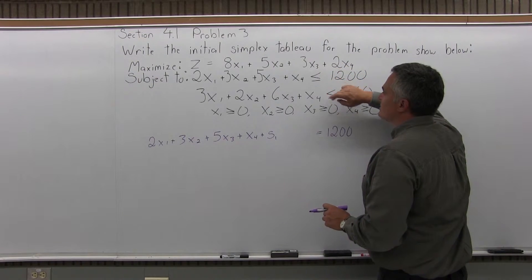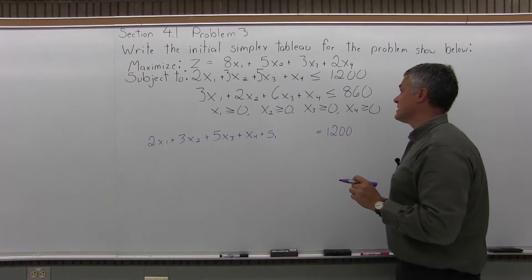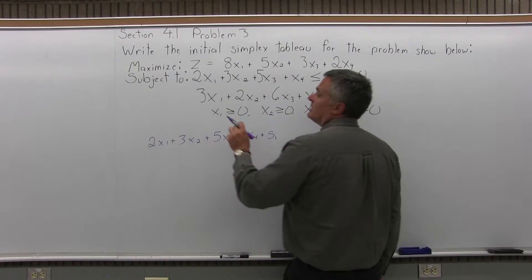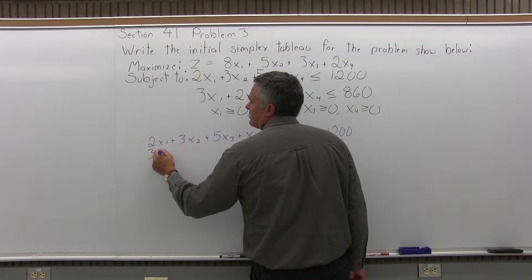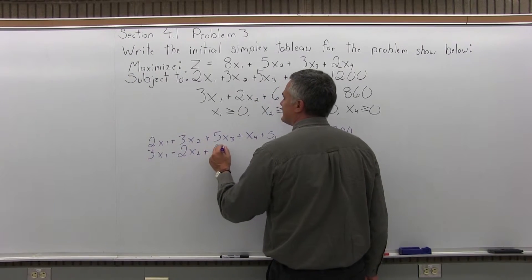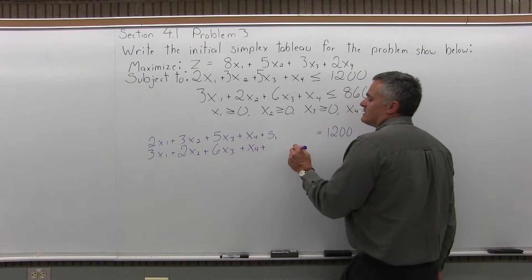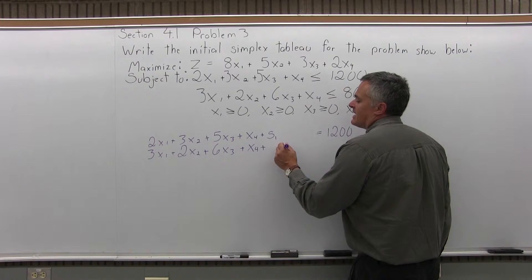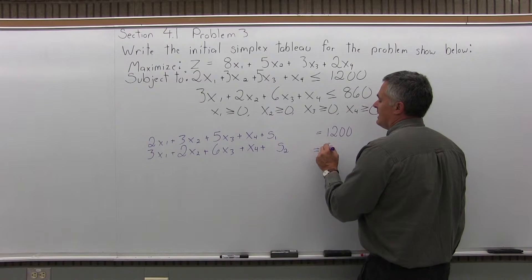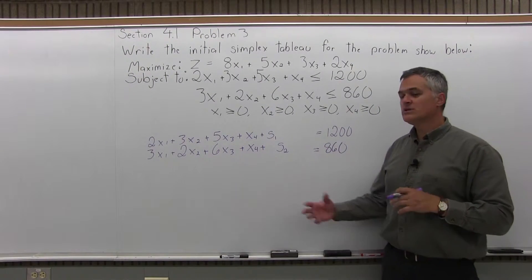The next constraint, 3x1 plus 2x2 plus 6x3 plus x4 is less than or equal to 860, will also be turned into a linear equation. To do that I will write 3x1 plus 2x2 plus 6x3 plus x4 plus S2 equals 860. Each constraint has to have its own slack variable — you can't use the same S for both.